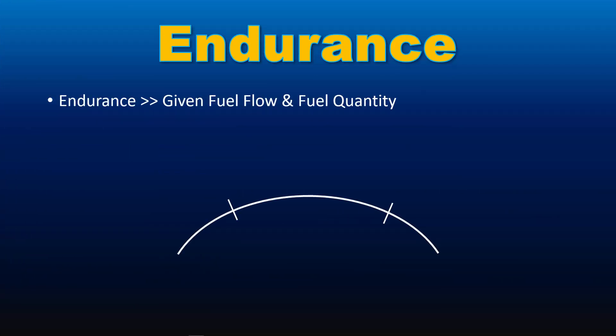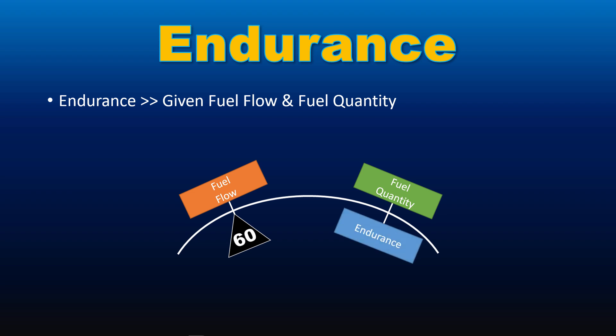Endurance. To ascertain aircraft endurance given the fuel flow either gallons per hour or liters per hour, align the 60 index on the inner scale with fuel flow on the outer scale. Next, align the cursor with the total fuel quantity on the outer scale and read off the endurance on the inner scale.